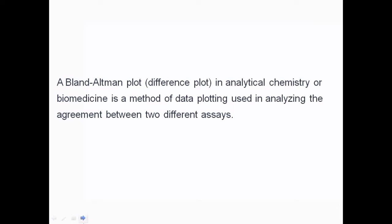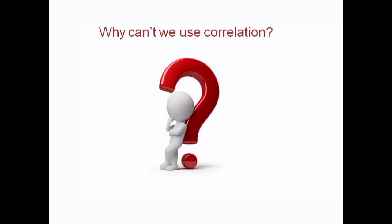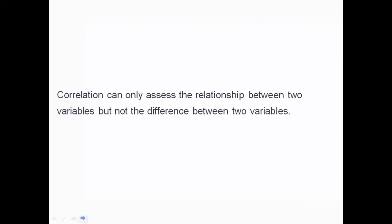The BA plot is used for analyzing the agreement between two different assays. What that means is: if you have two methods used for measuring a single thing, we are analyzing whether those two methods are equal or not. Now you may have a question — if we are seeing the agreement between two methods, can we use correlation? We've heard of correlation statistics. So let's look into that.